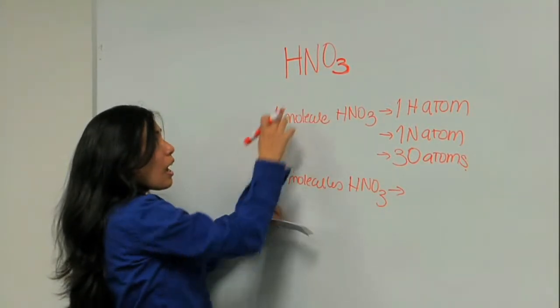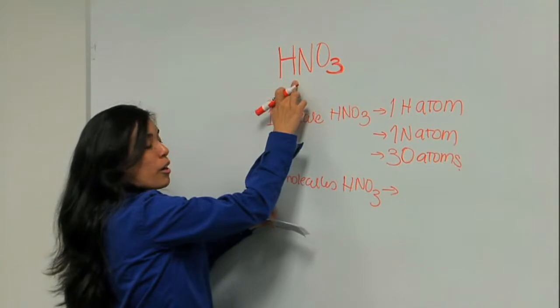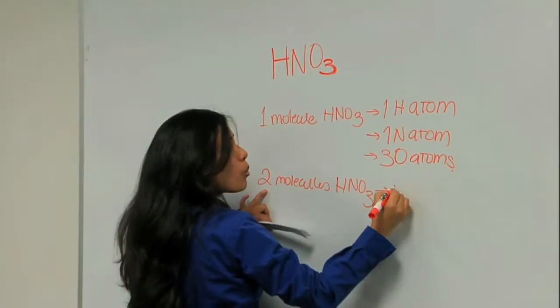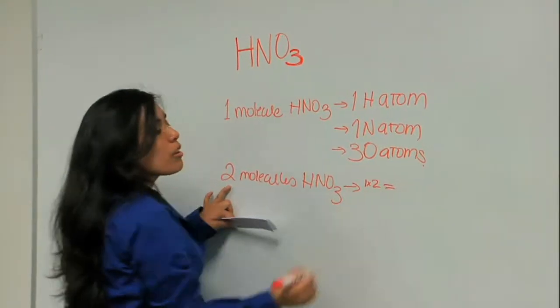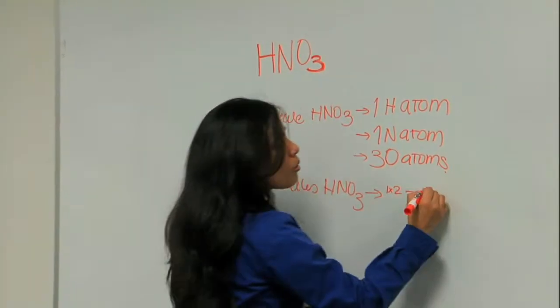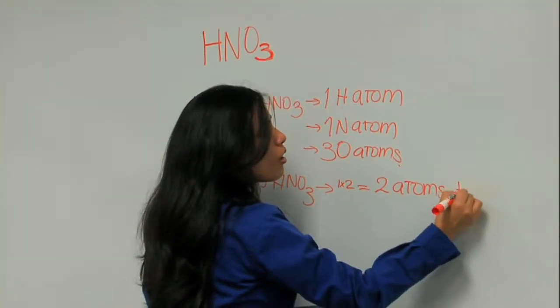Let's take as an example hydrogen. Hydrogen has no subscript, it's one. So I'm multiplying one times two. That gives me two. So I have two atoms of hydrogen.